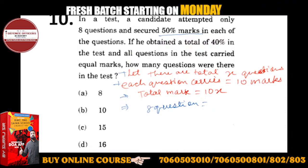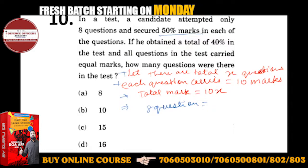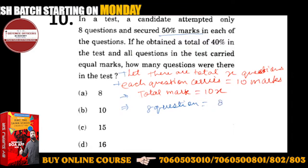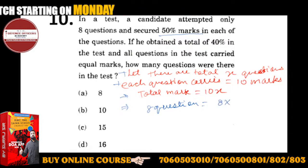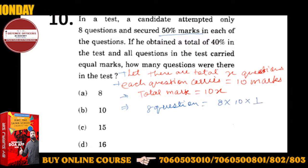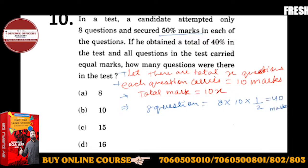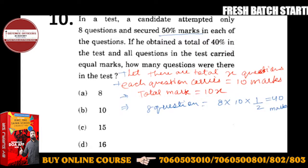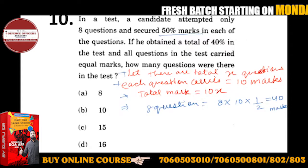8 questions में imagine करें — 8 into 10 होना चाहिए था, लेकिन हर question में आधे number मिले, half. So this will give you 40. तो 40 marks आए इसके, out of total.